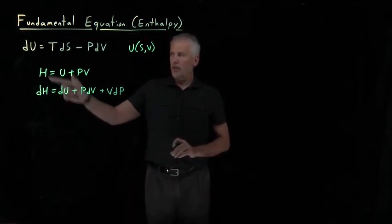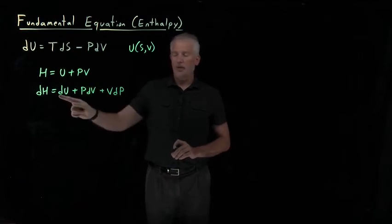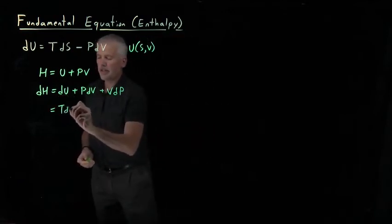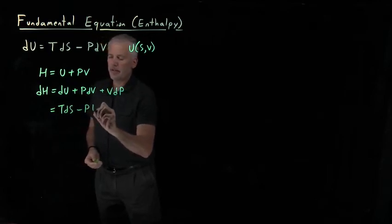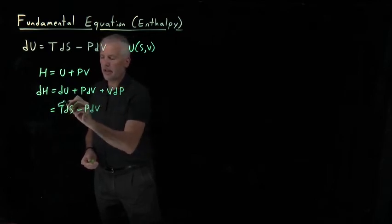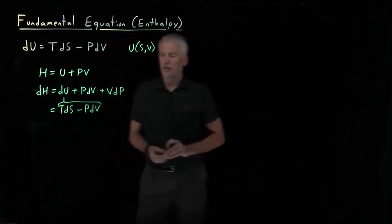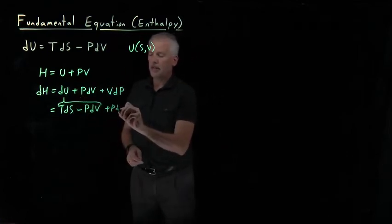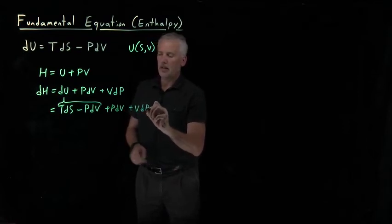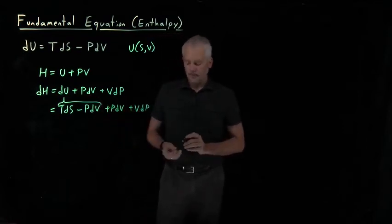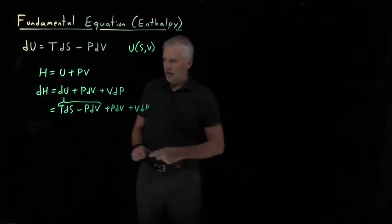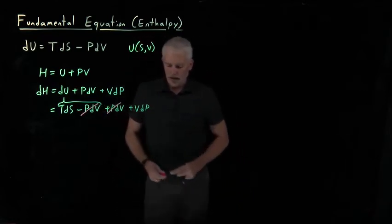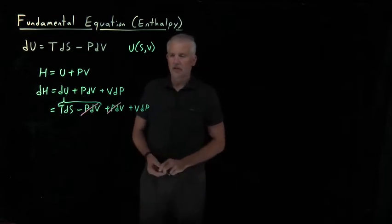But I know something about dU — the fundamental equation tells me what dU is equal to: dU equals T dS minus p dV. To that, I need to add p dV and V dp. But this minus p dV and this plus p dV are equal with opposite signs, so they cancel each other out.